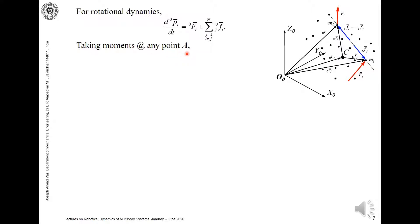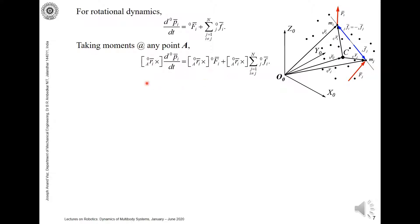Let's take moments about any point A. The point A may be fixed or it may move, but we take moments on both sides of this equation about point A. Mathematically, that is done using the r-cross matrix operating on the rate of change of linear momentum on the left-hand side. Here r-cross is a skew-symmetric matrix representing the position vector from A to particle i, expressed in frame zero — the structure of which we have already discussed earlier.